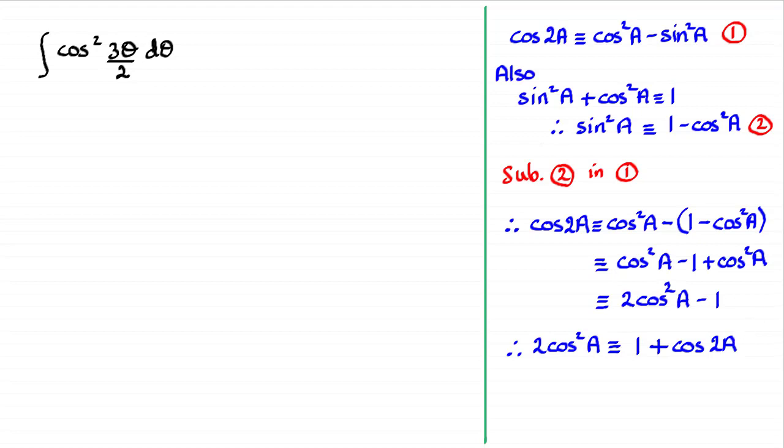So if we add 1 to both sides, we get 2 cos squared a is identical to 1 plus cos 2a. And by dividing both sides by 2, I get cos squared a is identical to a half of 1 plus cos 2a. I could put this all over 2, but it's much better to just think of it as a half of this result.